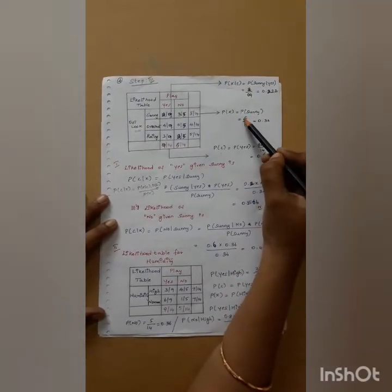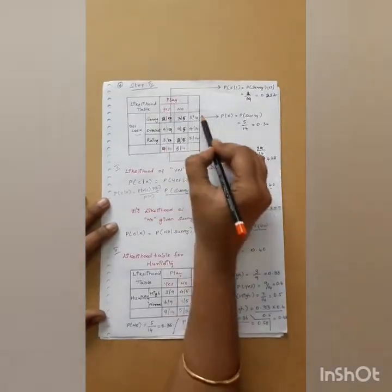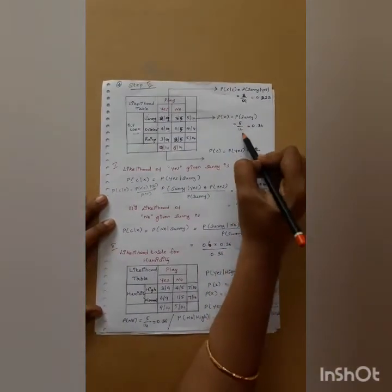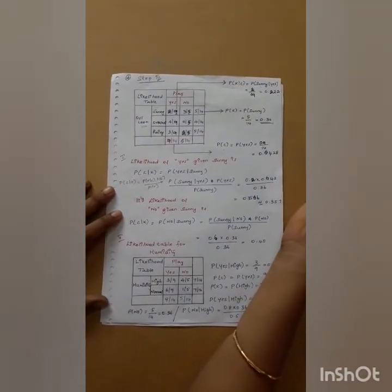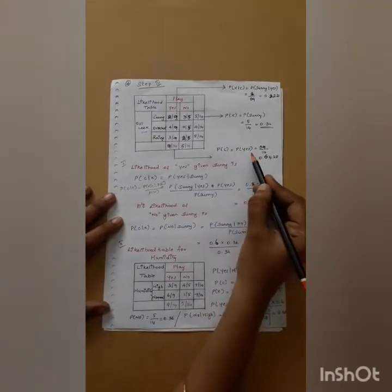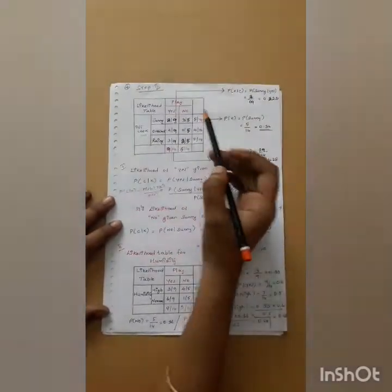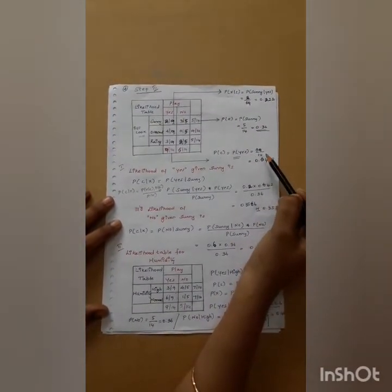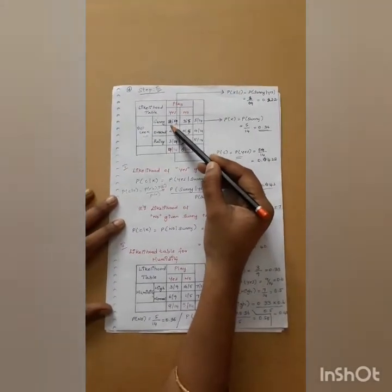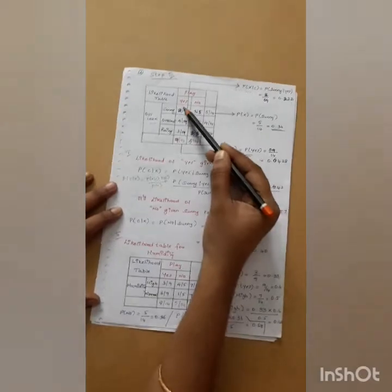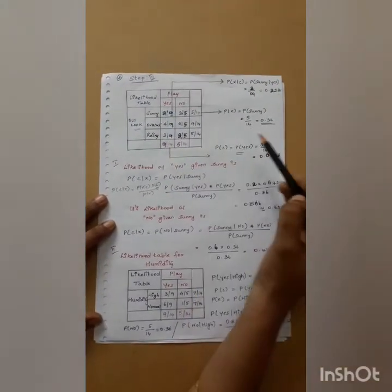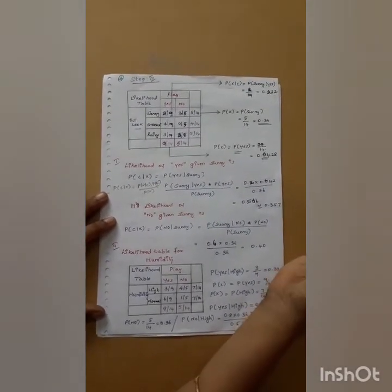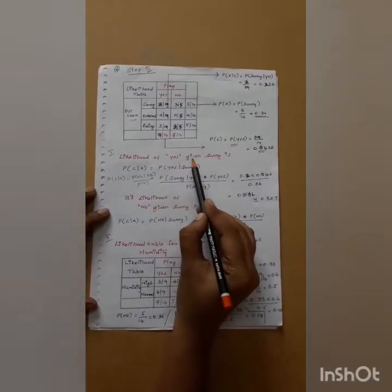The probability of x — the total probability of sunny considering both yes and no — is 5 divided by 14, which equals 0.36. Now we compute P(c), the probability of yes: considering sunny, overcast, and rainy together, the total for yes is 9, so it is 9 by 14, which equals 0.6428.